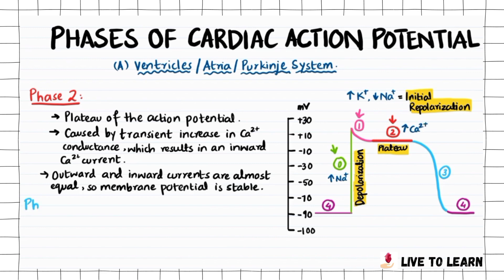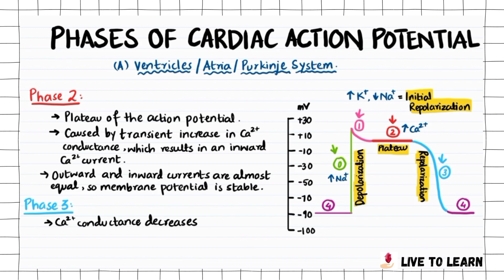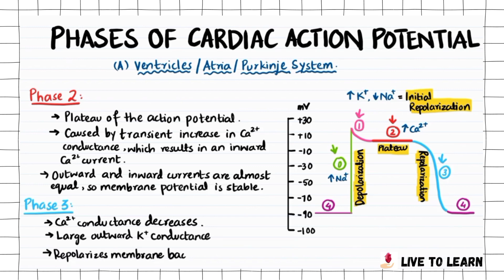Phase 3, the part shown in blue on the graph, represents a period of repolarization. During this phase, calcium conductance decreases and a high potassium conductance results in a large outward potassium current, which repolarizes the membrane back toward the potassium equilibrium potential.